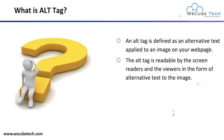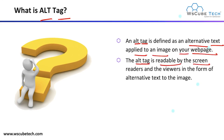Let's start with the basic definition of alt tag, which we are going to use in our image optimization. An alt tag is defined as alternative text. The full form of alt tag is alternative text applied to an image on your webpage. The alt tag is readable by screen readers and viewers in the form of alternative text to the image.